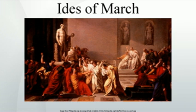The Ides of each month was sacred to Jupiter, the supreme deity of the Romans. The Flamen Dialis, Jupiter's high priest, led the Ides sheep — the Ovis Idulius — in procession along the Via Sacra to the Arx, where it was sacrificed.